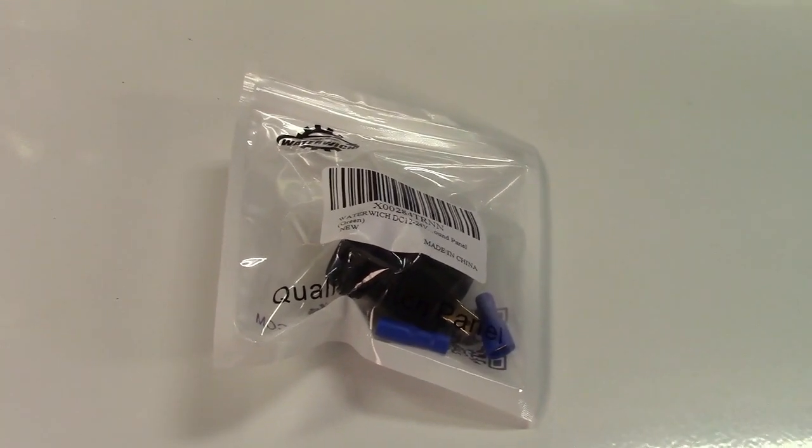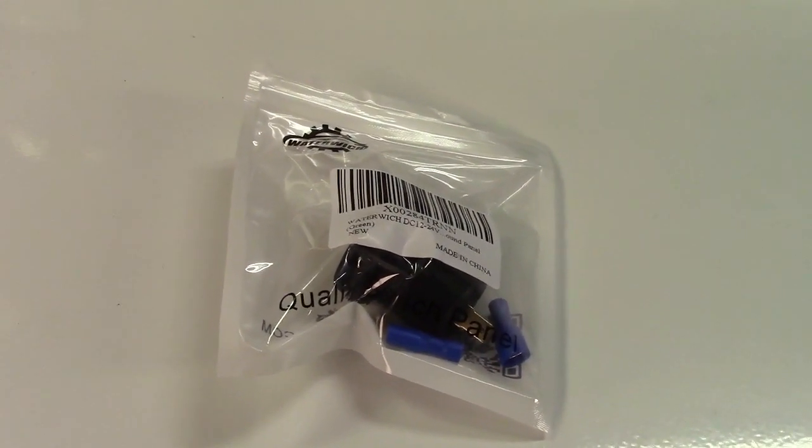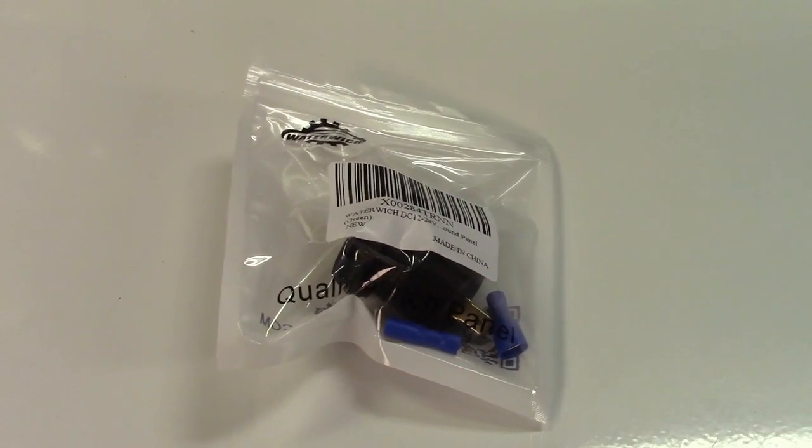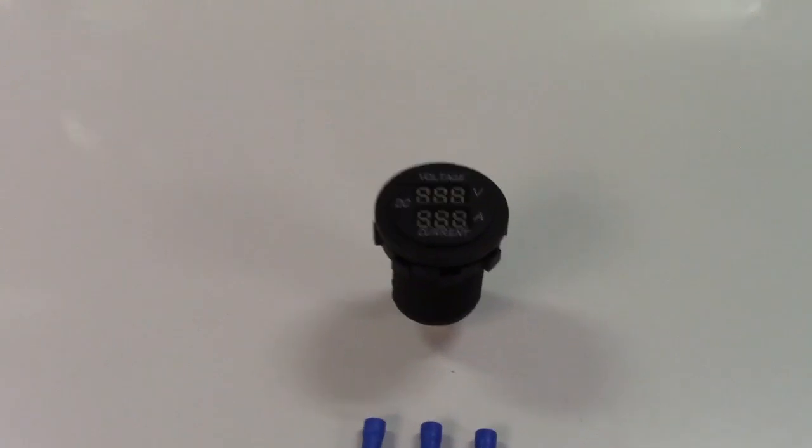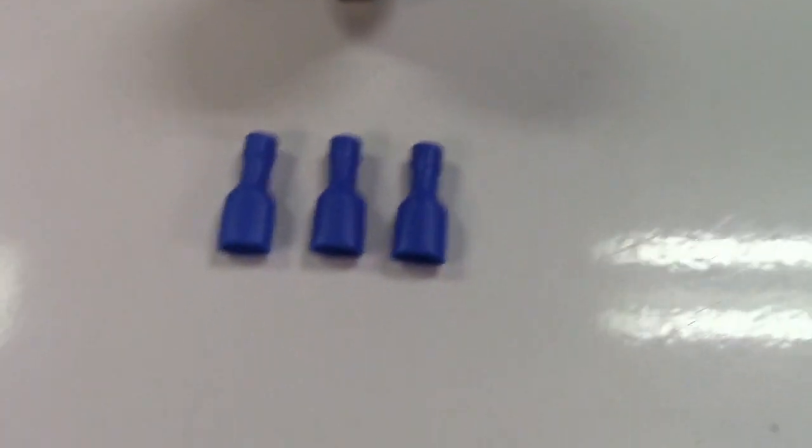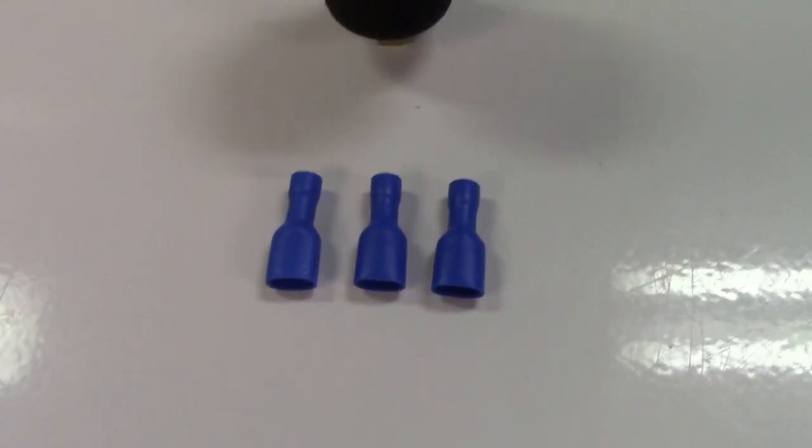This is the Water Witch 12 to 24 volt DC 10 amp panel mount meter. Let's take it out of the package. In the package is the meter itself and three terminals to go on the back of it.